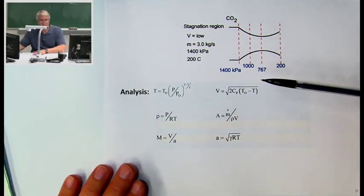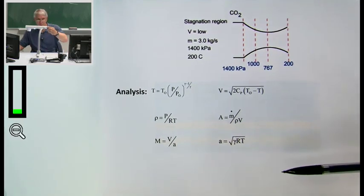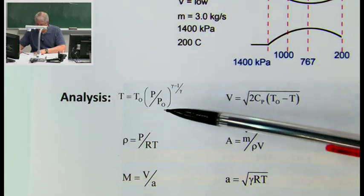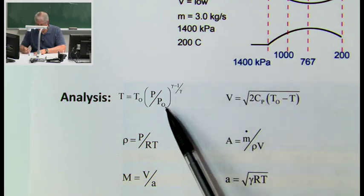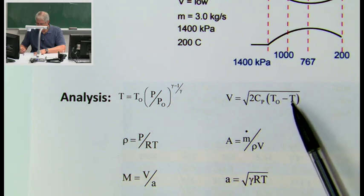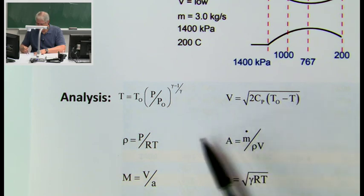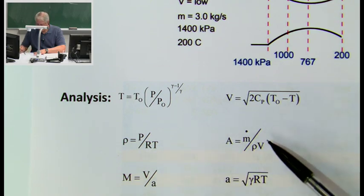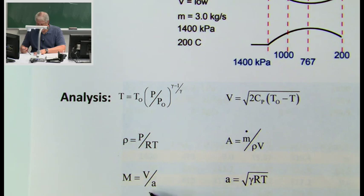We'll use the relationships developed thus far: the isentropic relation for temperature and pressure, the velocity relation derived using the Gibbs equation, the equation of state for density, the definition of mass flow rate for a steady flow to get area, the definition of Mach number, and the definition of the speed of sound.